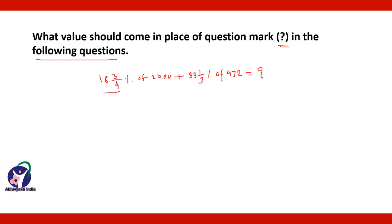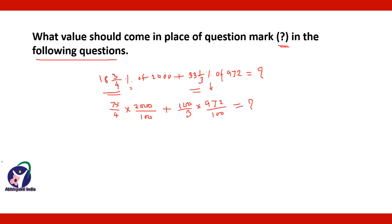Here, 18 and ¾ can be written as 75/4. Percent is 1 upon 100, so multiplied by 2000 upon 100. Plus, 33 and ⅓ can be written as 100/3. Percent, that is 1 upon 100, so it is multiplied by 972 by 100, which is equal to question mark.